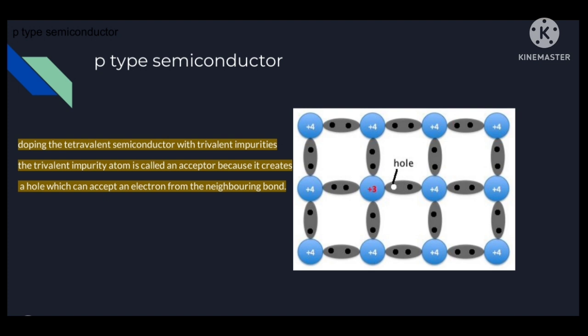The next type is the p-type semiconductor. When a suitable trivalent impurity is added to a pure germanium or silicon crystal, we get an extrinsic semiconductor known as a p-type semiconductor. The trivalent impurity atom has three valence electrons and is known as the acceptor atom, because it creates a hole which can accept an electron from the neighboring bond.